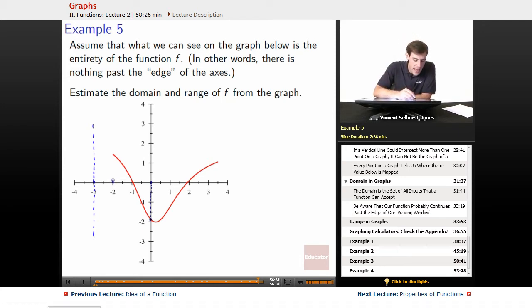So it looks like the edge is negative 2, looks like negative 2 is the very edge. And over here, 3 gets put in, 4 doesn't get put in, but it looks probably like 3.5 gets put in. So we'd say that the domain is going to go from negative 2 to 3.5.